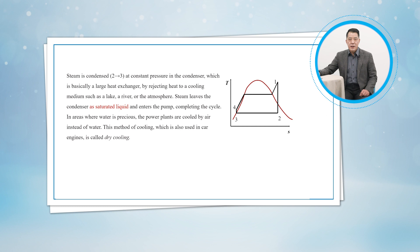In areas where water is scarce, the power plants are cooled by air instead of water. This method of cooling, which is also used in car engines, is called dry cooling. Several power plants in the world, including some in the United States, use dry cooling to conserve water.